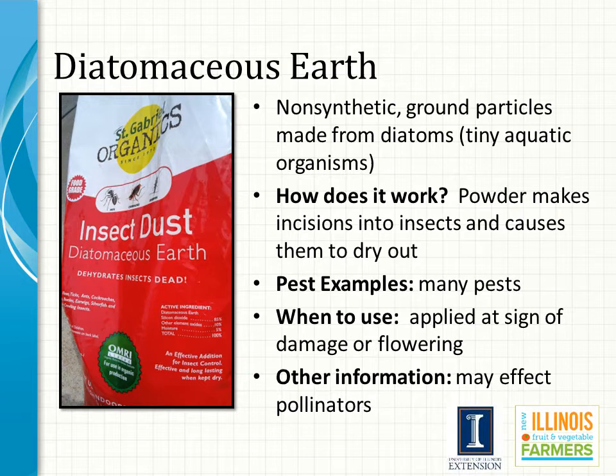Diatomaceous earth is also a powder, made of ground particles from diatoms, which are tiny aquatic organisms. Diatomaceous earth works by cutting incisions into the insects, which causes them to dry out. Because of this, it has a broad spectrum and can affect many pests. Typically, you will apply diatomaceous earth at the first sign of damage or at flowering of the crop. In addition, you should be aware that this powder can also affect your pollinators.